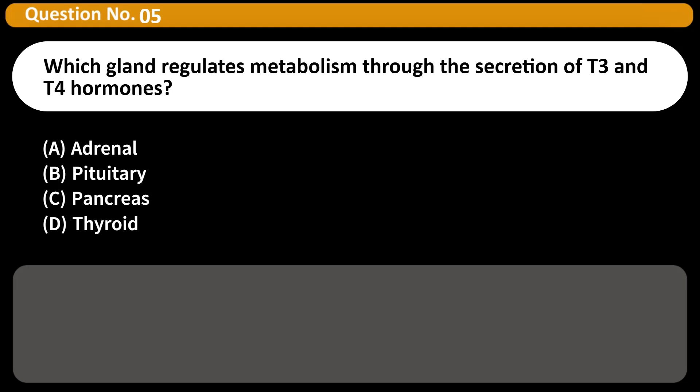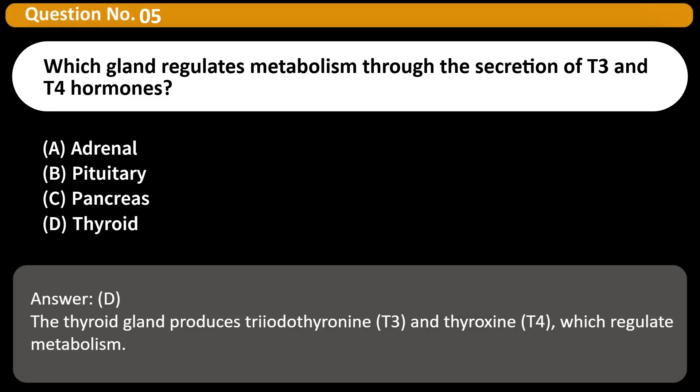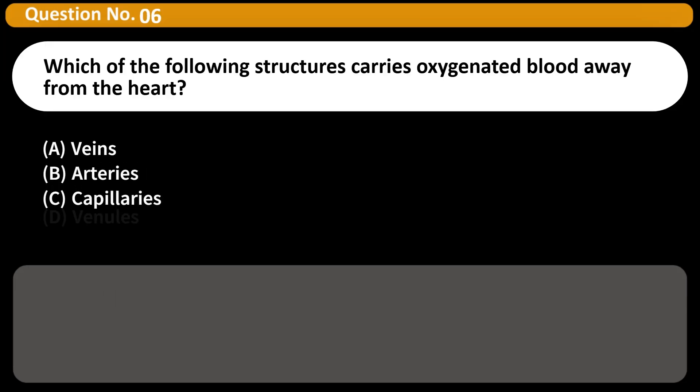Which gland regulates metabolism through the secretion of T3 and T4 hormones? A) Adrenal, B) Pituitary, C) Pancreas, D) Thyroid. Answer: D. The thyroid gland produces triiodothyronine (T3) and thyroxine (T4), which regulate metabolism.